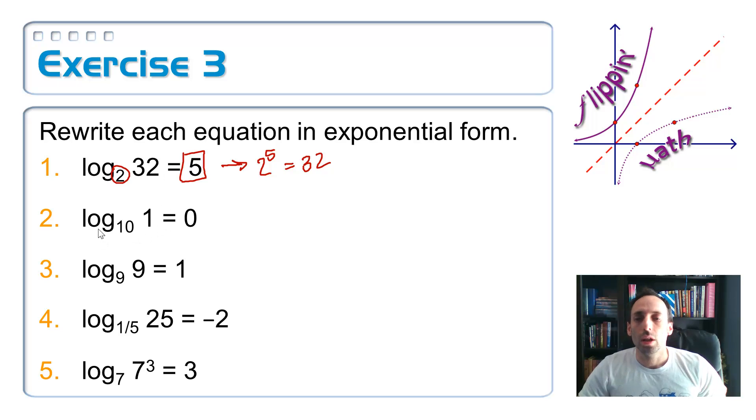On number 2, log base 10 of 1 is equal to 0. What's the exponential base? It's a 10. 10 to what power? The power is always the answer. 10 to the 0 power is equal to 1. This one's important. That one's going to be a property in just a second. Number 3, the exponential base is 9. 9 to the 1 power is equal to 9. This is another property that we'll talk about in just a minute.